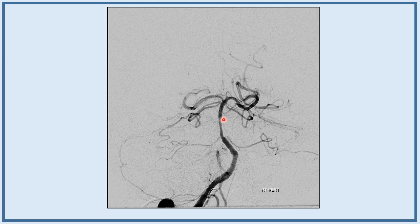The variant anatomy that's going to become important later is the SCA — we have duplicated SCAs. Every SCA has a division: a hemispheric division and a vermian division. That bifurcation can be anywhere, and sometimes they arise separately from the basilar trunk. When they do, the lower is always hemispheric and the upper is always vermian. That's important because both are eloquent, but the vermian one is much more eloquent — it covers the midbrain, with very proximal perforators to the ventral midbrain, and it usually supplies portions of the quadrigeminal plate.